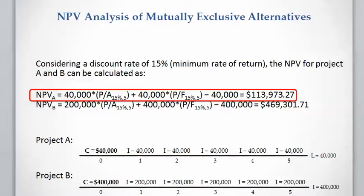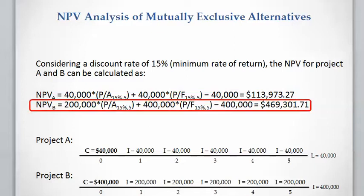First, we calculate the NPV for Project A using the minimum rate of return of 15% as the discount rate. Because the NPV of Project A at a discount rate of 15% is positive, we can conclude that Project A is economically satisfactory.